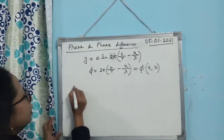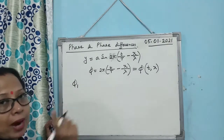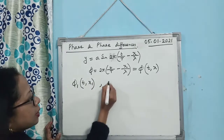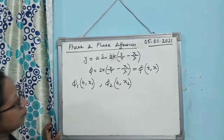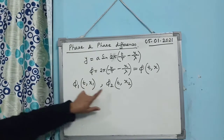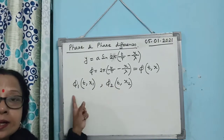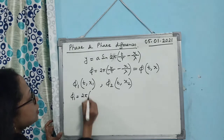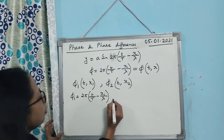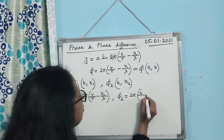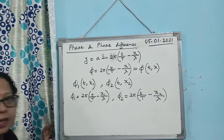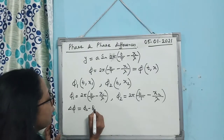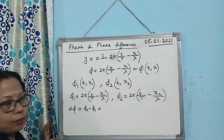Consider two particles at the same time but at different positions. At the same time I have taken two particles at different positions. Their phases will be: φ₁ = 2π(t/T minus x₁/λ), whereas φ₂ = 2π(t/T minus x₂/λ). The phase difference will be φ₂ minus φ₁. When you subtract, the 2πt/T term cancels because both particles are at the same time.